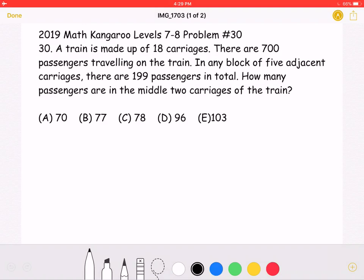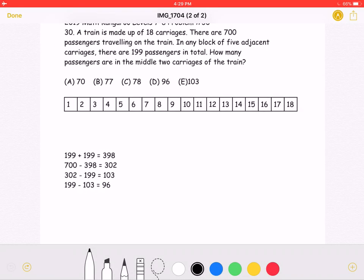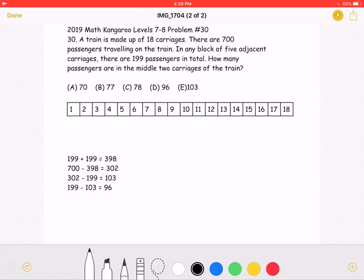This is the problem as it originally appeared on the test. Here is the version with the solution. To start, I have written the numbers 1-18 to symbolize the carriages numbered 1-18. As the problem states that there are a total of 18 carriages.